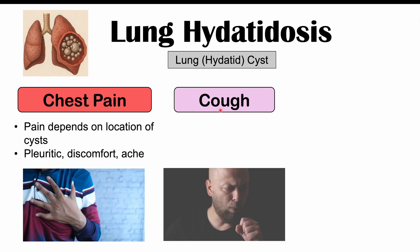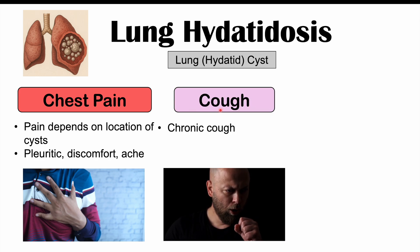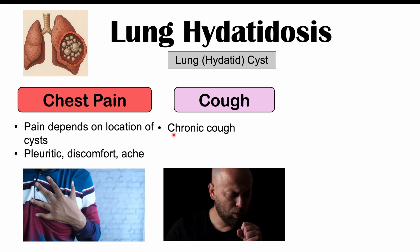We can also see chronic cough — a cough lasting eight weeks or longer. While common causes include smoking, asthma, COPD, and gastroesophageal reflux disease, echinococcus lung infections are actually one of the infectious causes of chronic cough. Most of the time it is a dry cough, but depending on where the cyst is residing in the lung, we may see hemoptysis — coughing up of blood.